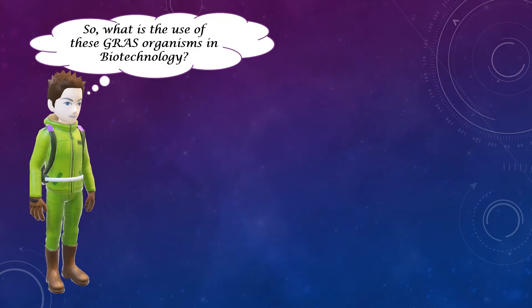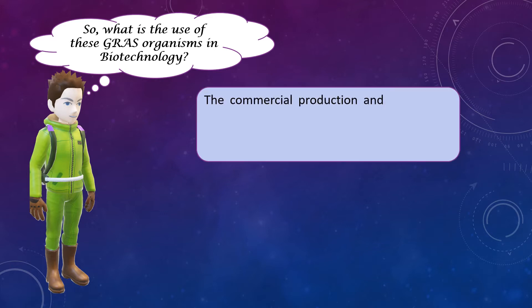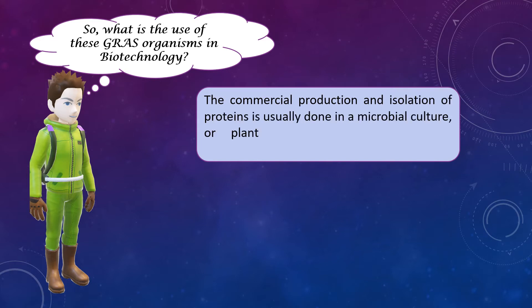Now let us see what is the use of these GRAS organisms in biotechnology. The commercial production and isolation of proteins is usually done in a microbial culture, or plant or animal source, by a process called downstream processing.